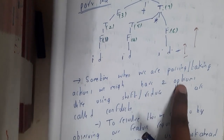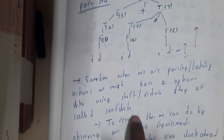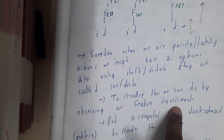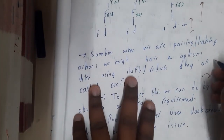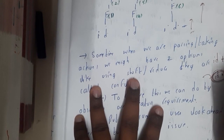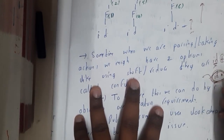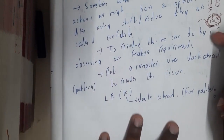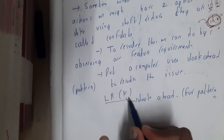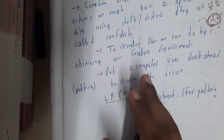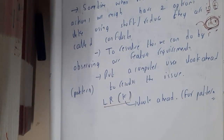Sometimes when parsing we might have two options — shift or reduce. These are called conflicts. To resolve them, we look at the future requirement, which is called look-ahead. For example, if you need id+, you can avoid the id* production. LR0 means it will not look ahead, whereas LR1, LR2, etc. will look that many symbols ahead.